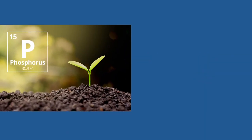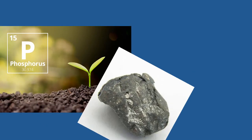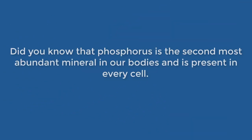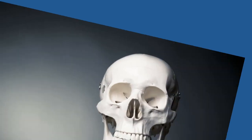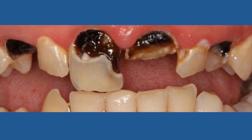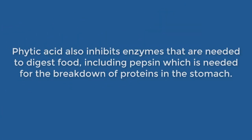Some studies have indicated that phosphorus could be more important than even calcium when it comes to remineralizing teeth. Phosphorus is the second most abundant mineral in our bodies and is present in every cell — 85% of it is found in bones and teeth. A deficiency in this mineral can cause tooth decay as well as many other non-oral related problems. Phytic acid also inhibits enzymes that are needed to digest food, including pepsin, which is needed for the breakdown of proteins in the stomach.